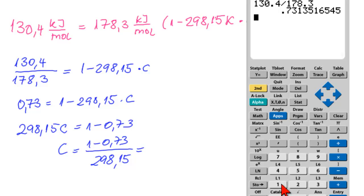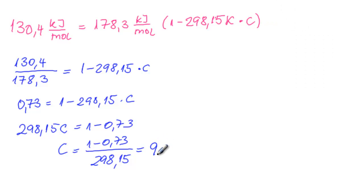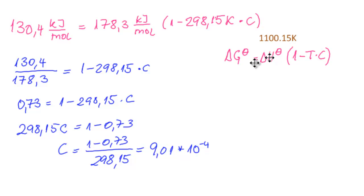Solving for C: C = (1 − 0.73) / 298.15 = 0.268 / 298.15 = 9.01 × 10^(−4) (in units of K^(−1)).